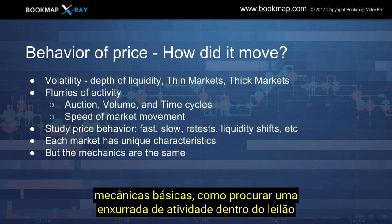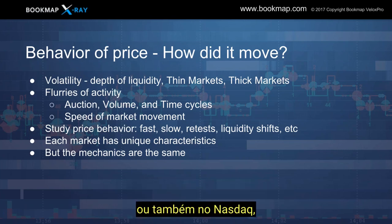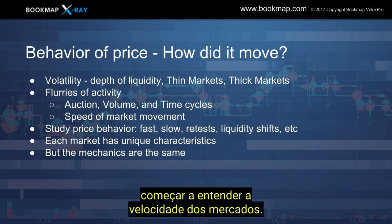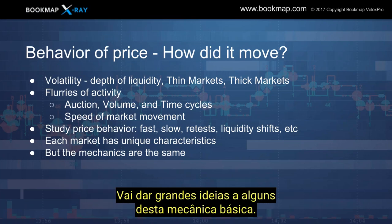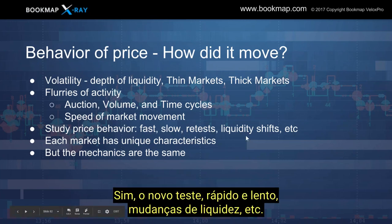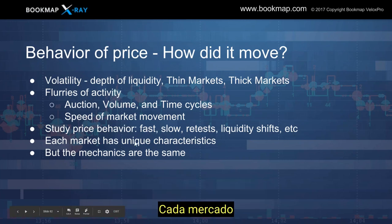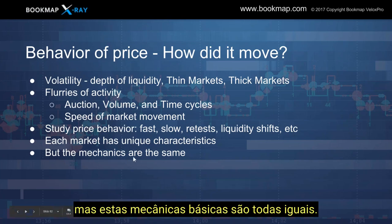Looking for flurries of activity within the auction, within volume, or within time cycles like the S&P cash open or the NASDAQ as well. Start to understand the speed of the markets — how quickly is that occurring, or was it a slow movement? Fast, slow, retest, liquidity shifts — each market has its own unique characteristics, but these basic mechanics are all the same.